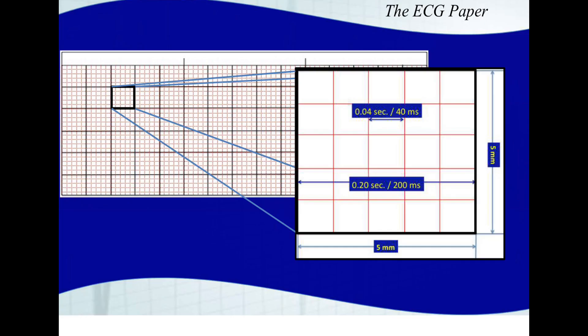Here's a much cleaner representation of what I've been saying. We've zoomed in on one single large box, and you can see that it's five small boxes: one, two, three, four, five. Five small boxes tall: one, two, three, four, five. One small box is 0.04 seconds or 40 milliseconds in length and time, where one large box is 0.20 seconds or 200 milliseconds.